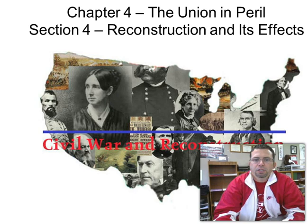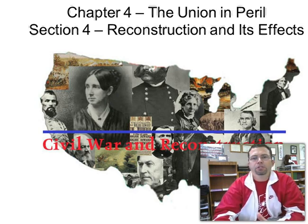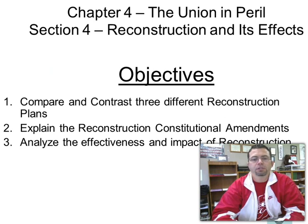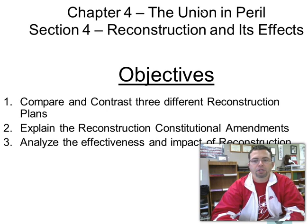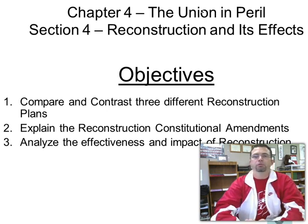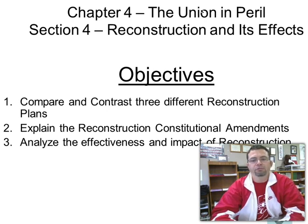You can see Chapter 4, Section 4 is all about the Reconstruction following the Civil War. Our objectives are to compare and contrast three different Reconstruction plans — Lincoln's plan, President Johnson's plan, and the Congressional plan. We'll also explain the Constitutional Amendments: 13, 14, and 15, which some people call the Civil Rights Amendments. And we'll analyze the effectiveness and impact of Reconstruction.